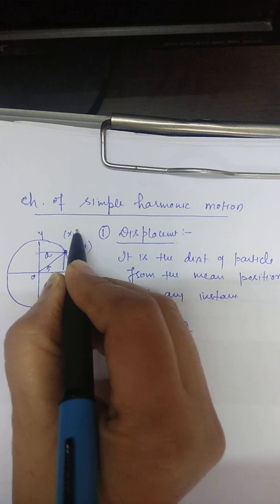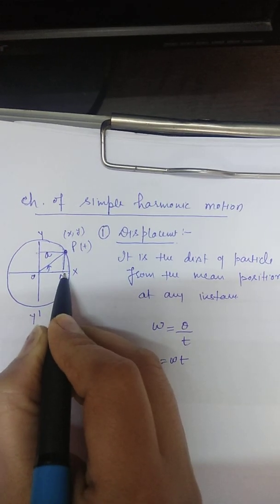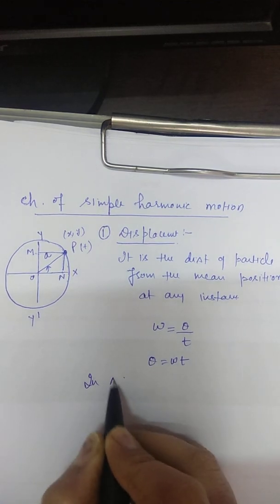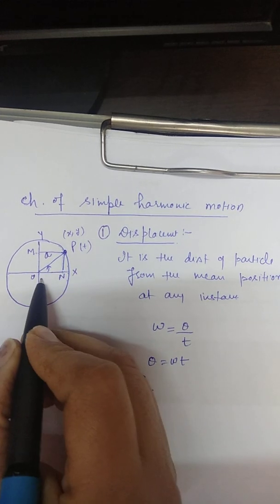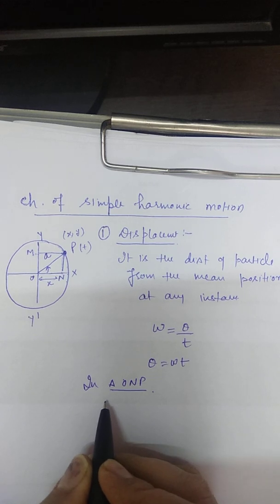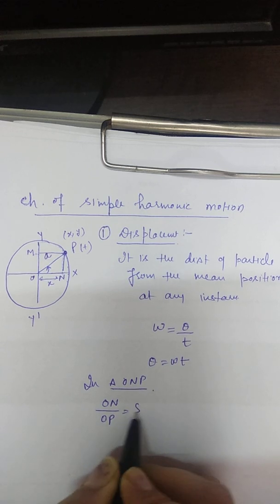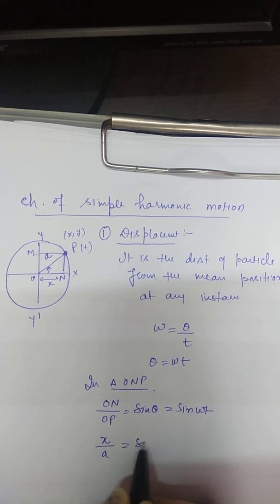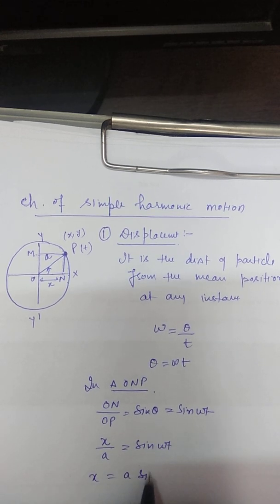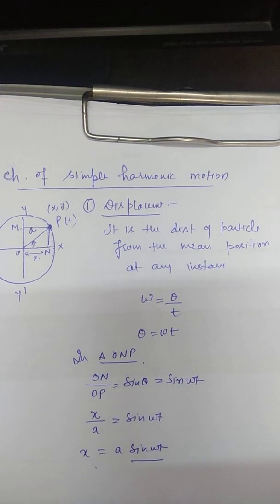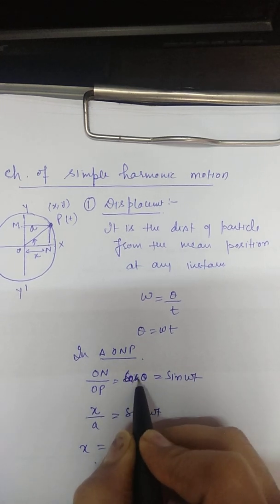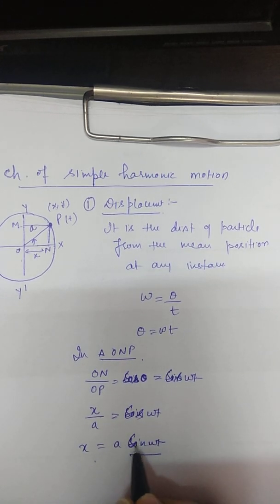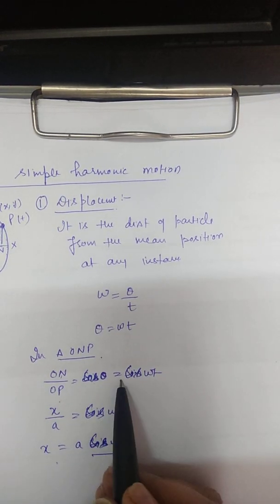We will calculate the projections x and y. From point p, draw a perpendicular pn. In triangle ONP, ON divided by OP equals cos theta, which equals cos(ωt). So x equals A cos(ωt). Similarly, pn divided by op gives sin(ωt), so y equals A sin(ωt). This is the displacement of the particle.